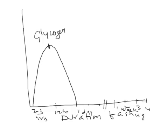As glycogen stores go down, another process starts — gluconeogenesis. Initially gluconeogenesis goes on at a lower pace up to 12 hours, then it picks up steam, reaches peak by 24 hours, and continues for the next seven days. So gluconeogenesis starts at 2 to 3 hours of fasting, takes steam at 12 hours, reaches peak by 24 hours — exactly when glycogen is completely depleted — and takes care of the body's glucose needs.